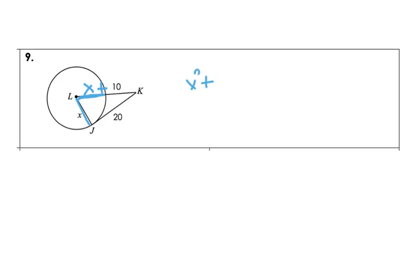we're going to take x squared, a radius plus our tangent line squared, 20, equals. And now we need to take our hypotenuse of our right triangle and square that. Now it is not 10, it's x plus 10. So we're going to do x plus 10 squared.